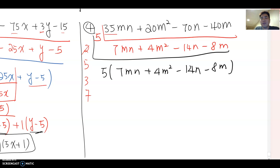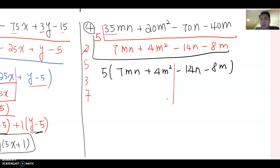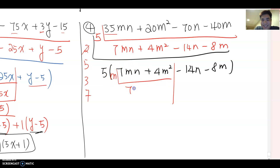We still have four terms, so we can use grouping — split into two groups of two. The first group is 7mn plus 4m squared, and the second group is 14n plus 8m. What is the common factor in the first group? Yes — m is the common factor, so it becomes m times (7n plus 4m).